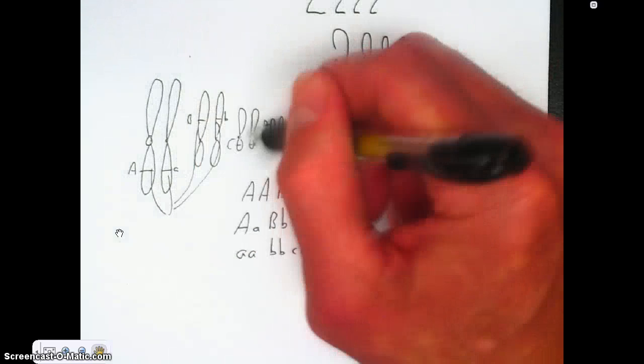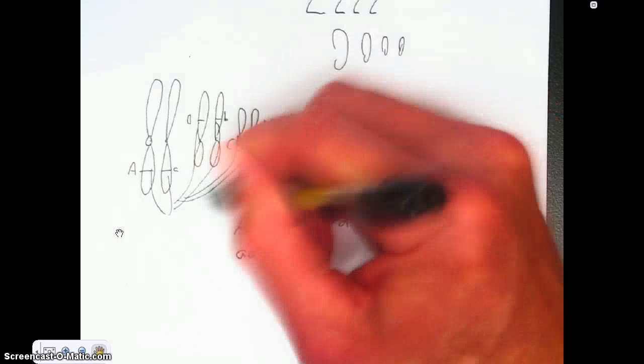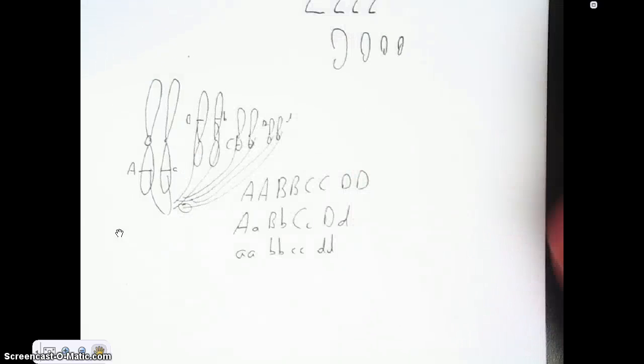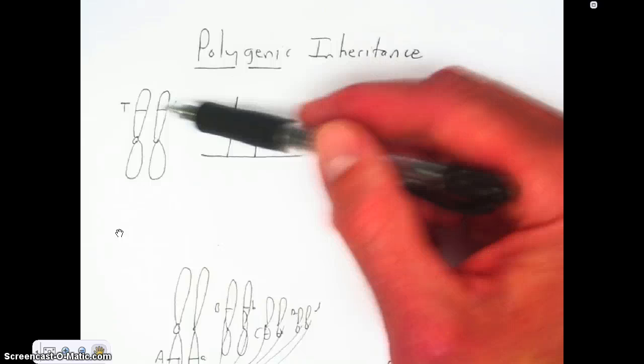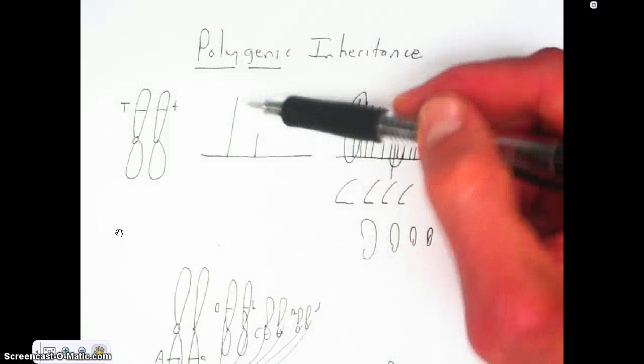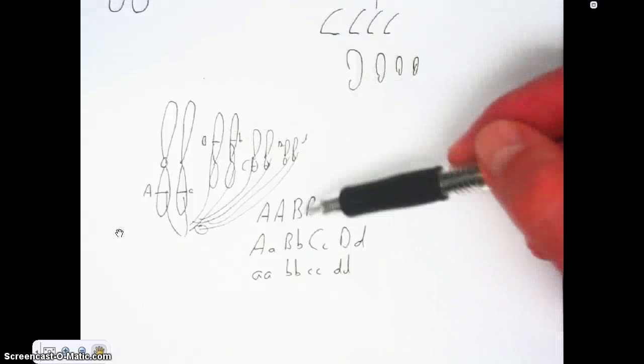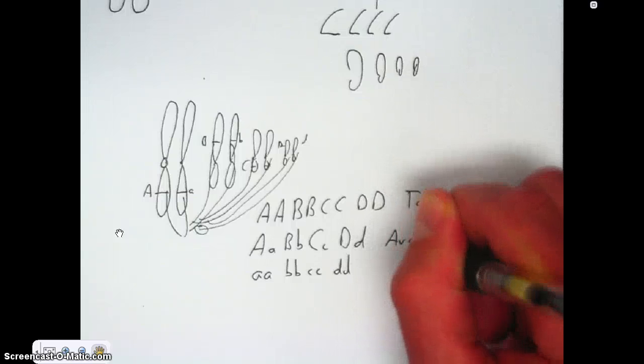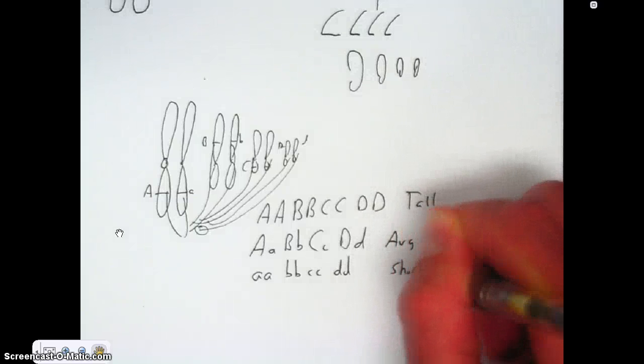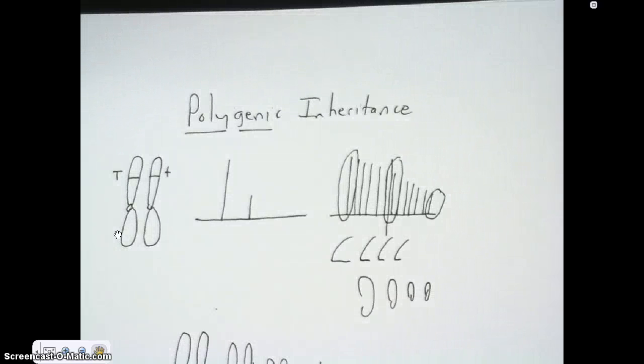So all these genes chip in together to express the trait that has a wide variety of expression, and that is what is meant by polygenic inheritance. Instead of one gene location, two alleles controlling the expression, like in this case tall, there are many genes that work together to give the expression. So again, in our example, this one would be a very tall person, this one would be average, and this person would be a short person. So this is polygenic inheritance.